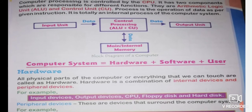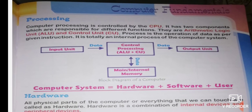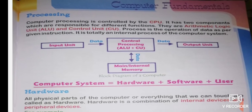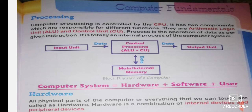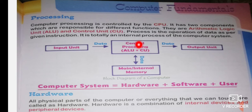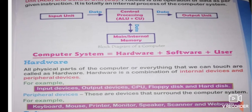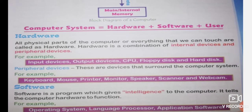Inside the CPU, you can see ALU, which stands for Arithmetic Logic Unit, and CU, which stands for Control Unit. The ALU performs all calculations. The Control Unit controls all the functions of your computer. In this way, your computer processes information.